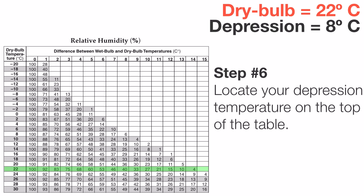Then step six, we're going to locate the depression on the top. In this case, it's eight degrees Celsius and we're going to come down. Notice we didn't really use the wet bulb on this chart. We're simply using the dry bulb, which is the same as the air temperature, and the depression, which is the difference between the dry and the wet.